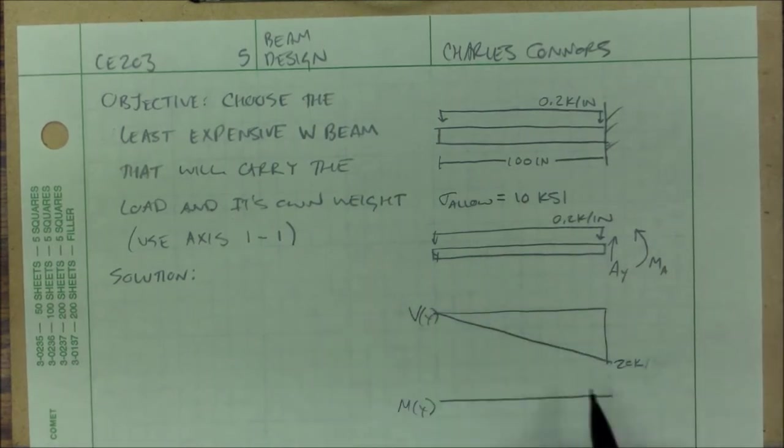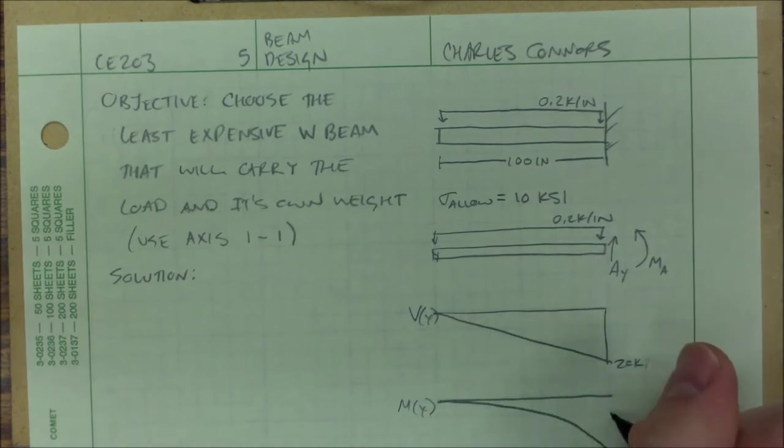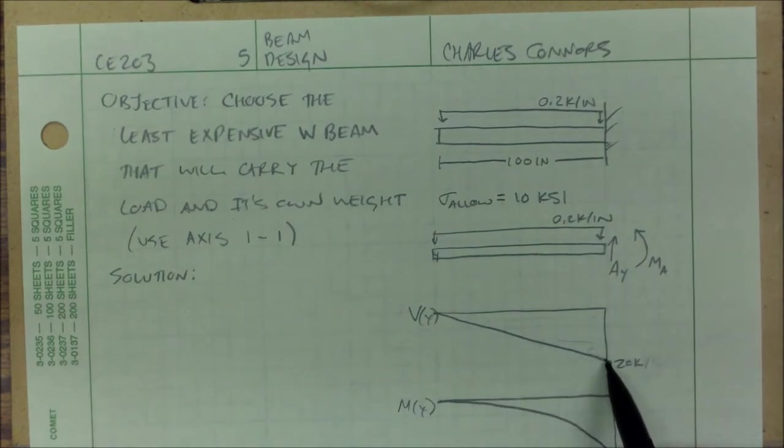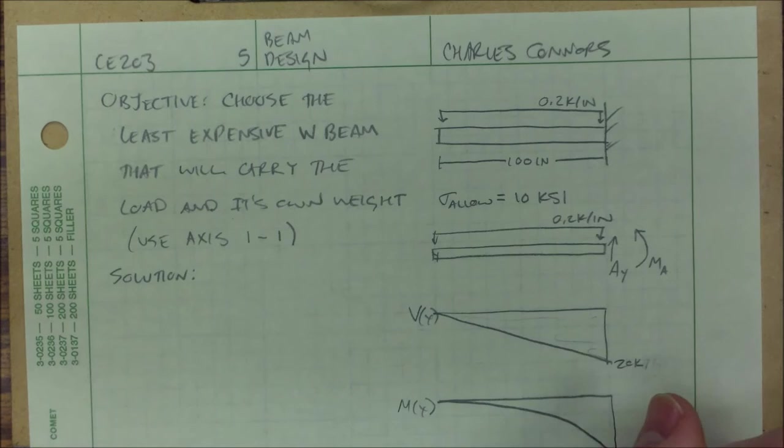My moment diagram is going to be parabolic. And this value equals the area of the whole entire shear. Since it's a triangle, it's negative 1,000 kip per inch.